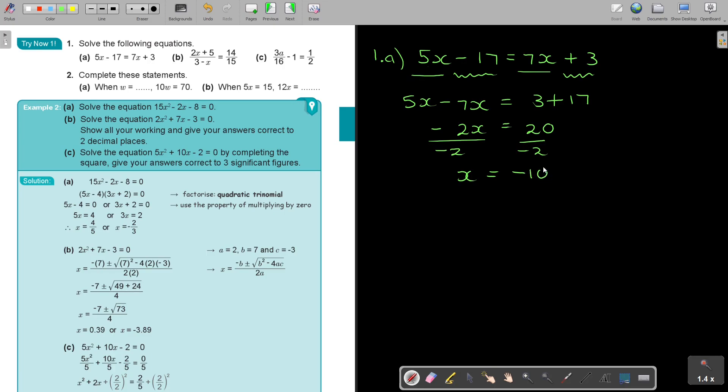You can test it. If you substitute negative 10, I'm just going to test the first one. Let's check it. We're going to substitute that negative in. So it's going to be 5 times negative 10 minus 17. And 7 times negative 10 plus 3. That's going to be negative 50 minus 17, negative 67. This is going to be negative 70 plus 3. And that's also going to be negative 67. So can you see the two sides are equal?